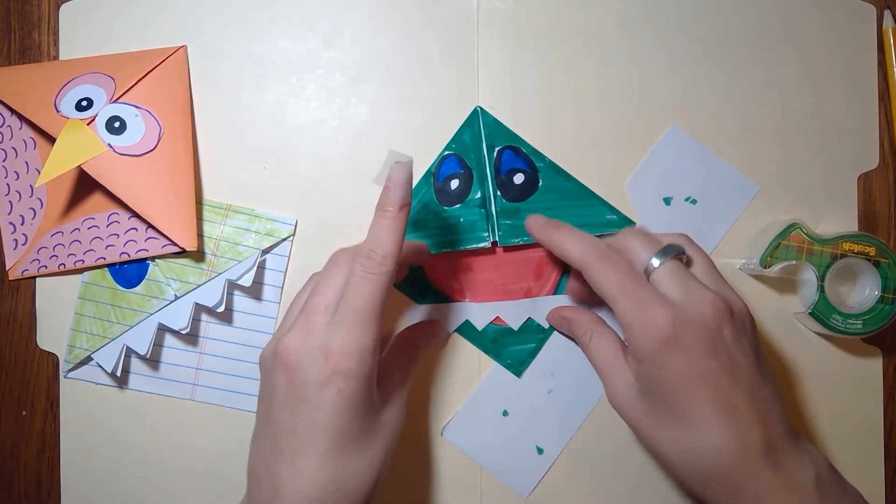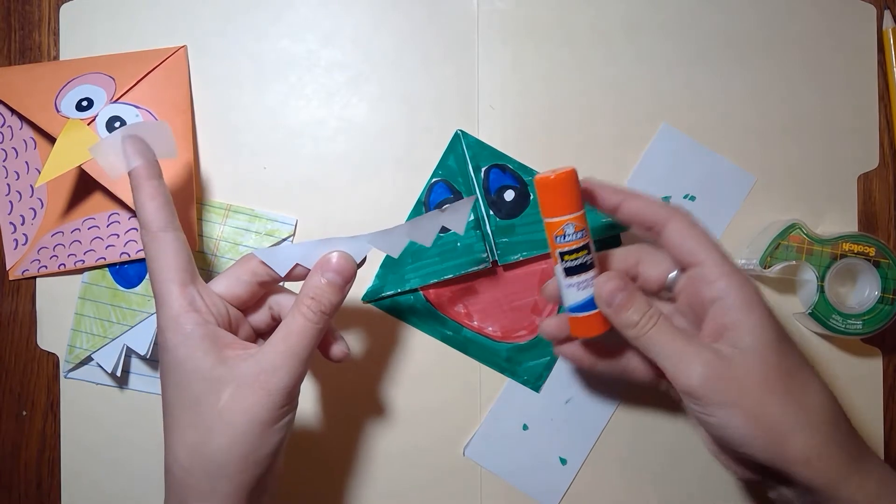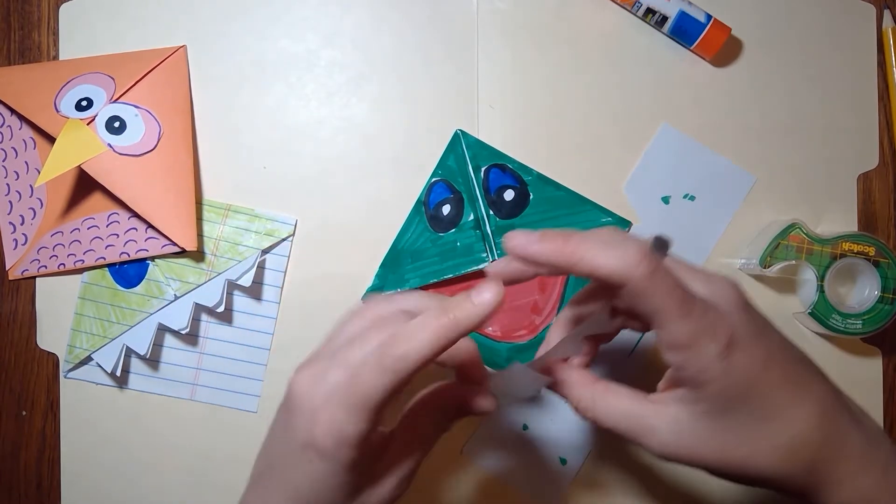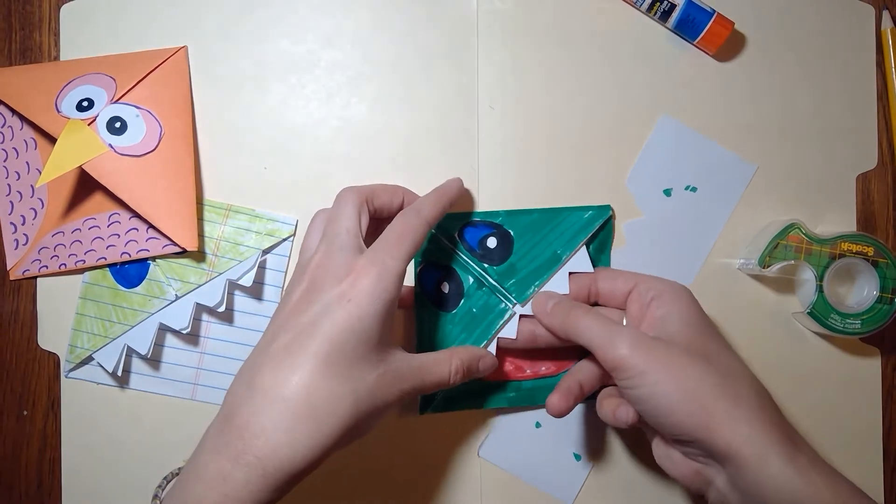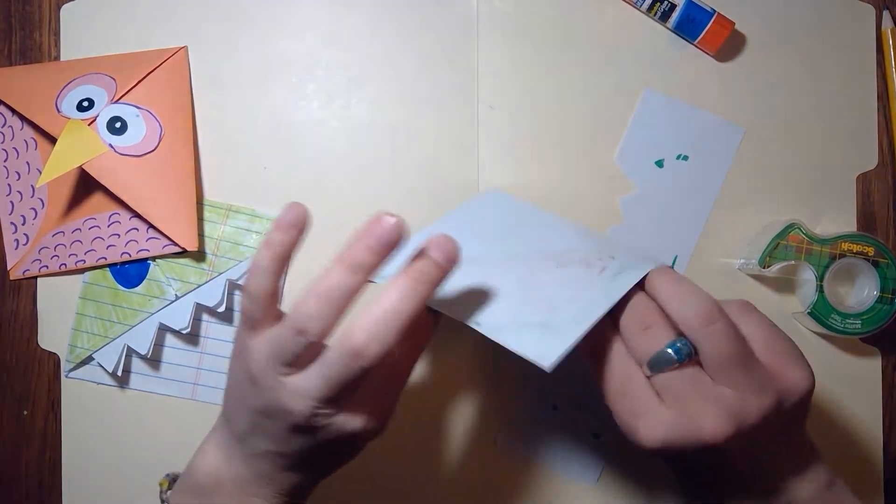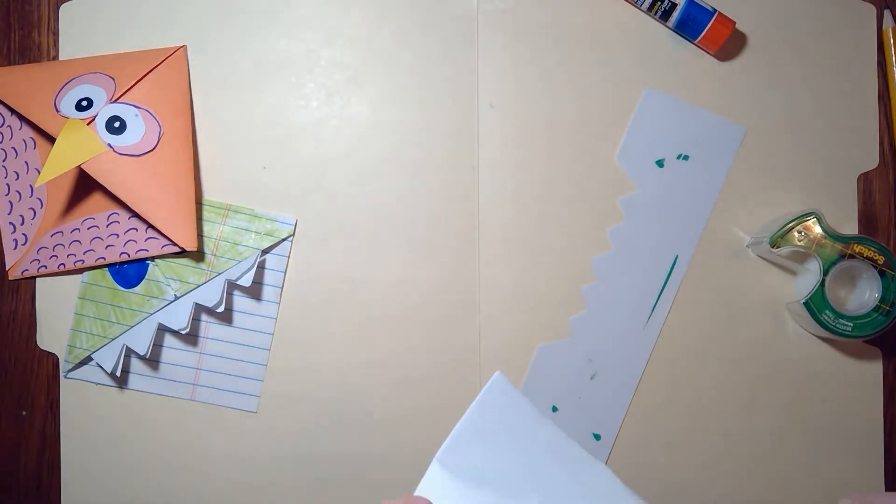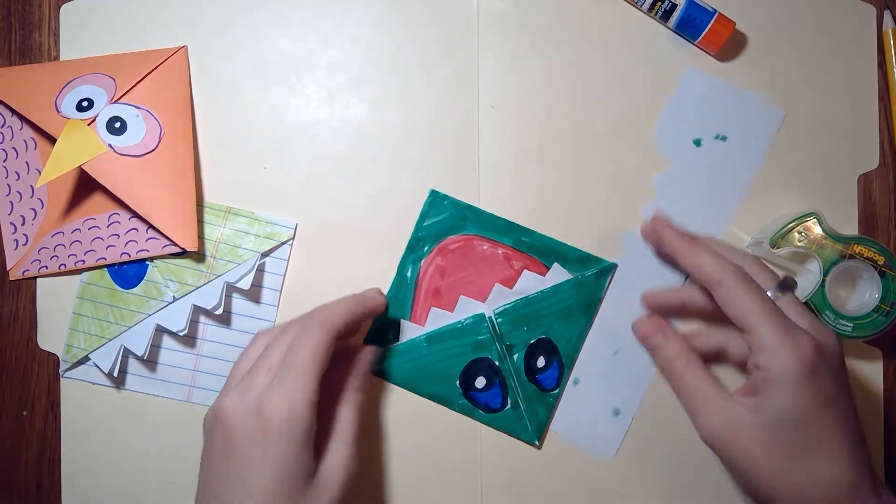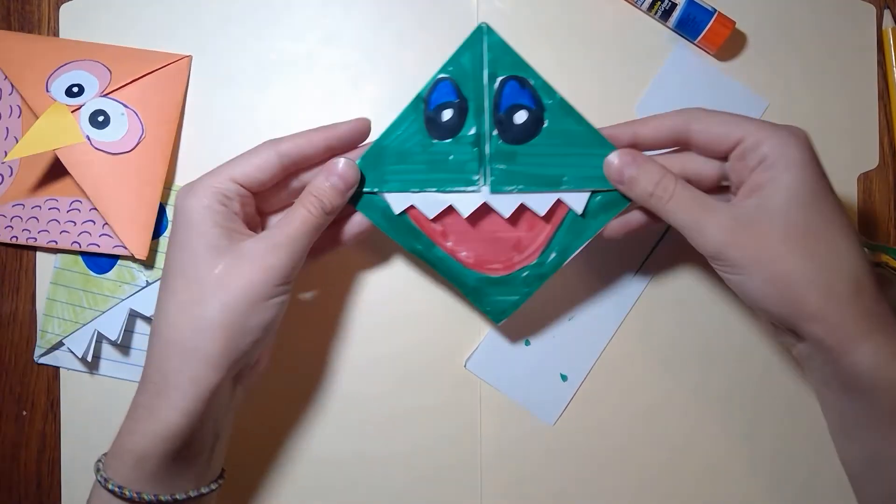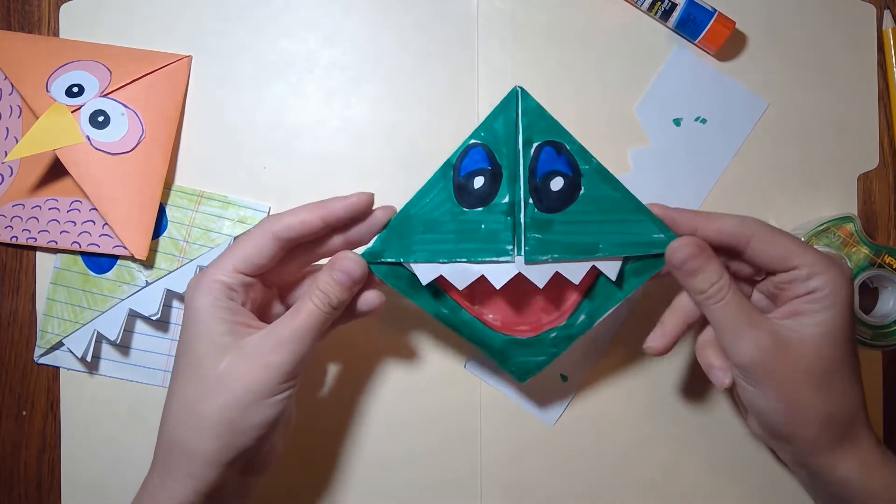Now, you can use a little bit of tape, or you can always use glue like a glue bottle, or a glue stick. I'm just going to use tape today. And there you have it. There is our monster bookmark. We're going to take a bite out of reading.